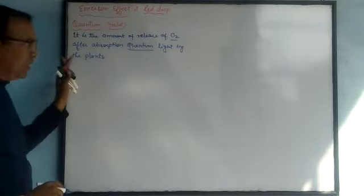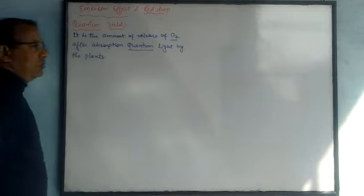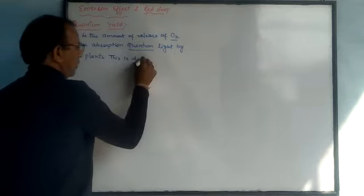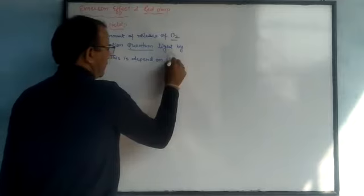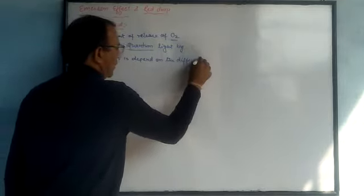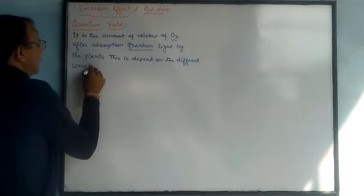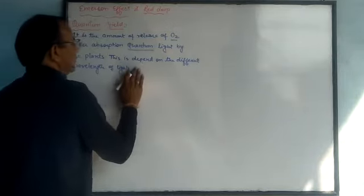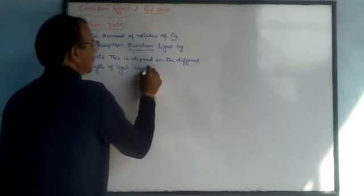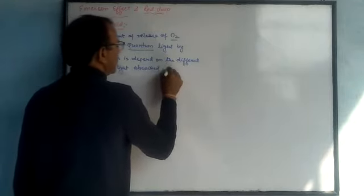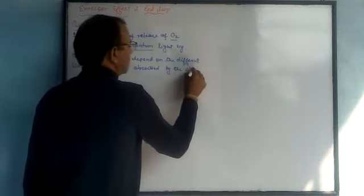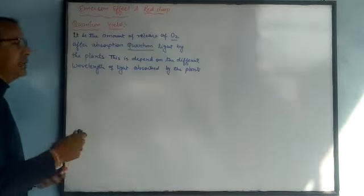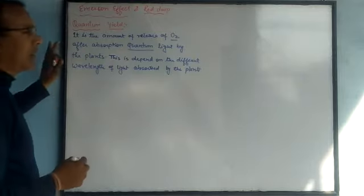This quantum yield depends on the different wavelengths of light absorbed by the plant. This was represented by Emerson through a graphical representation, showing how quantum yield is expressed across different wavelengths.